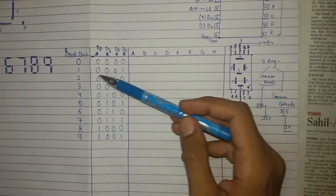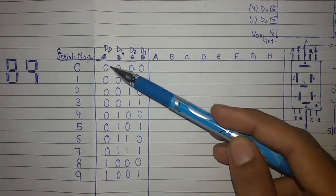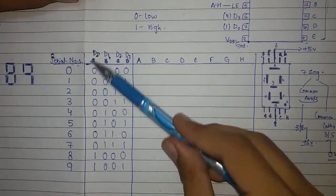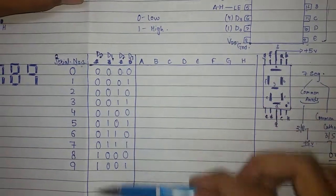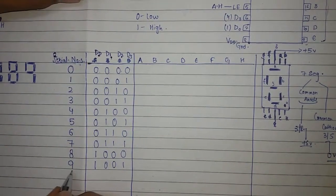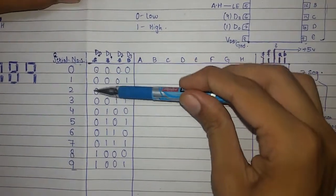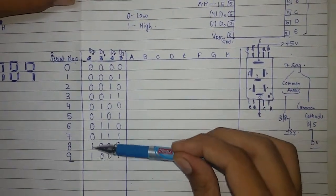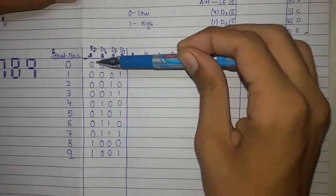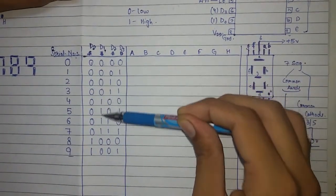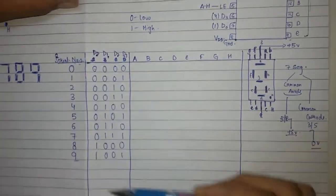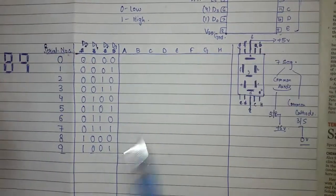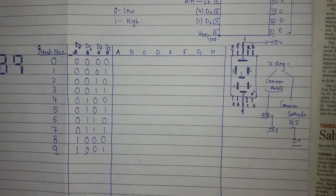I have written down the binary codes. Zero represents low and one represents high. There is a pattern for writing these codes: in the first column write eight zeros then eight ones, but we only need up to nine. For the second column write four zeros then four ones repeating. For the third column write two zeros then two ones repeating. For the fourth column alternate one zero one one. This gives you the binary pattern for digits zero through nine.